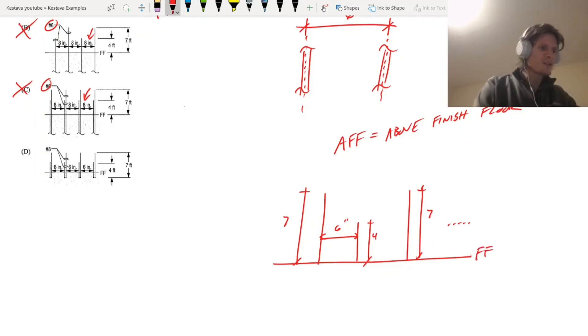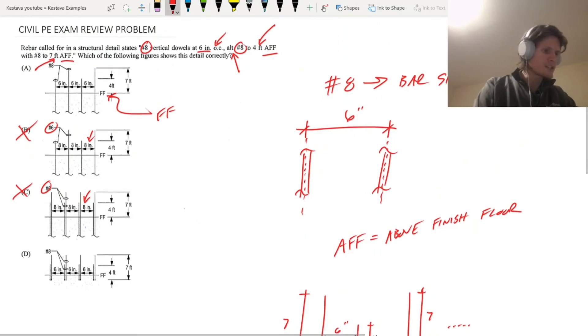That would be our finished floor. If we use that information, let's see. Here and here for D, both of those dimensions are correct. You have the 6 inches, so that looks good. You have the number 8 size, so that looks good. Everything looks pretty good here.